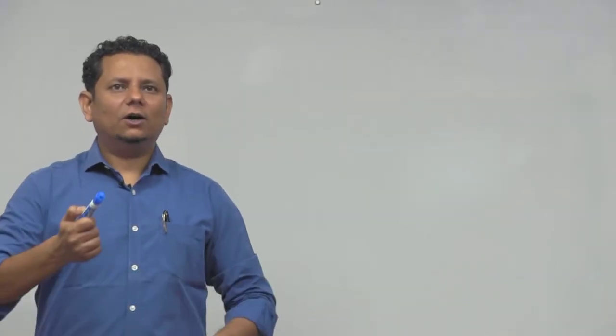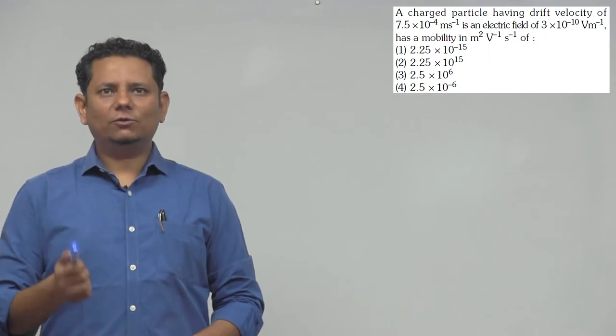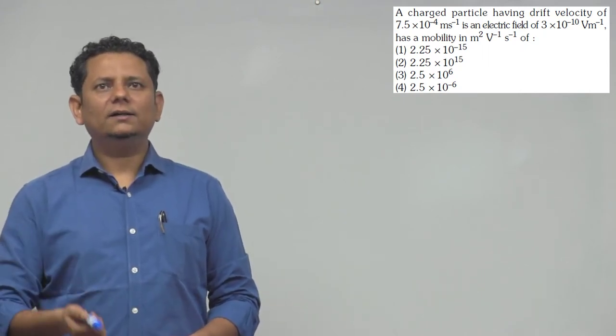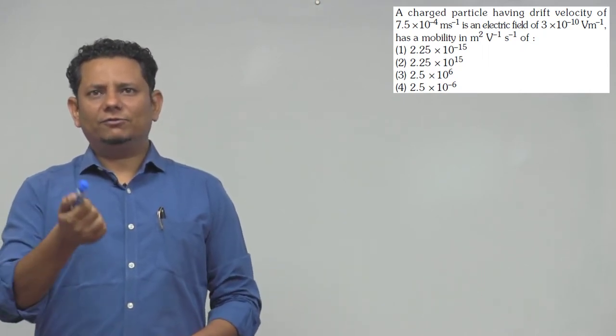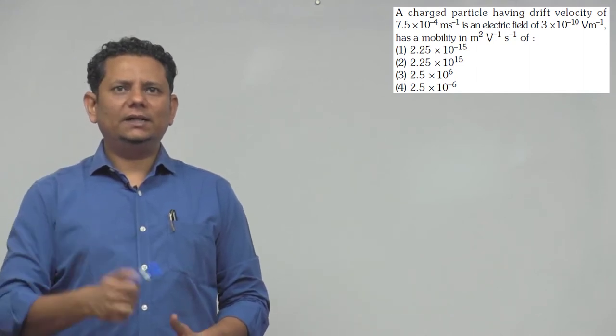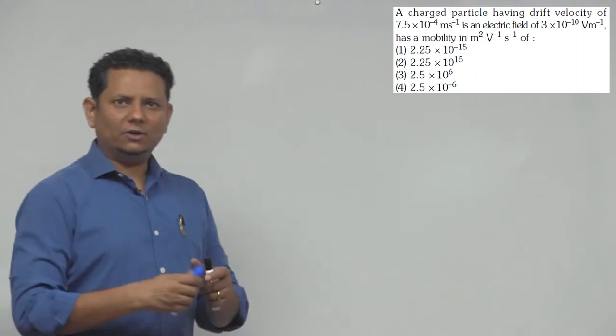Next question: A charged particle having drift velocity of 7.5 × 10^4 meters per second in an electric field has a mobility. We need to find the mobility.